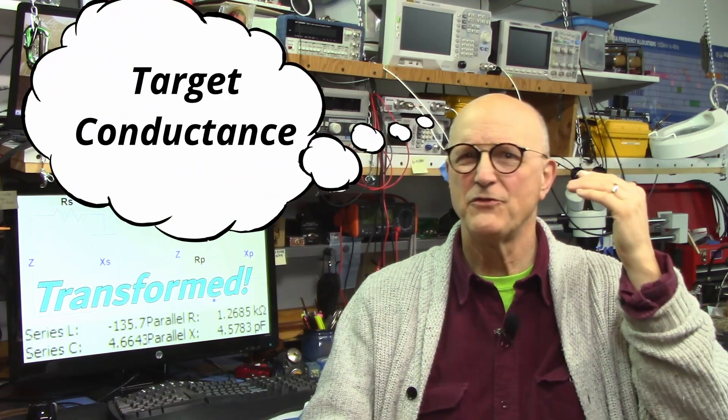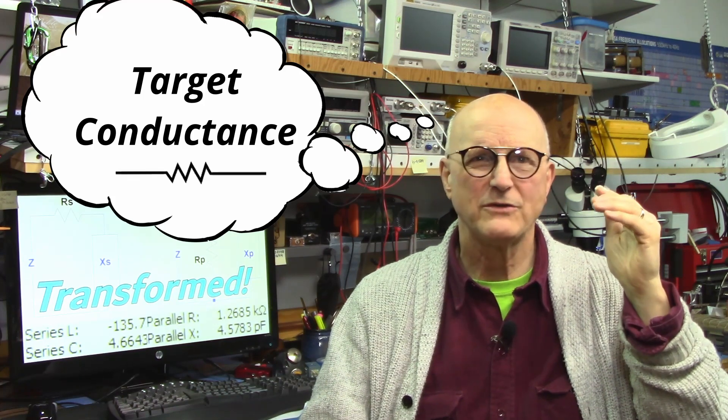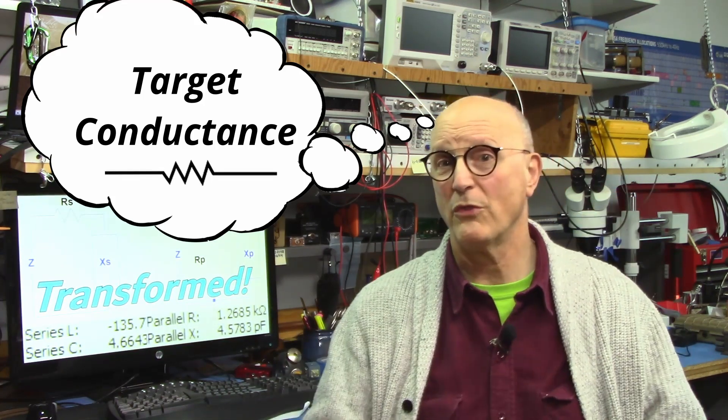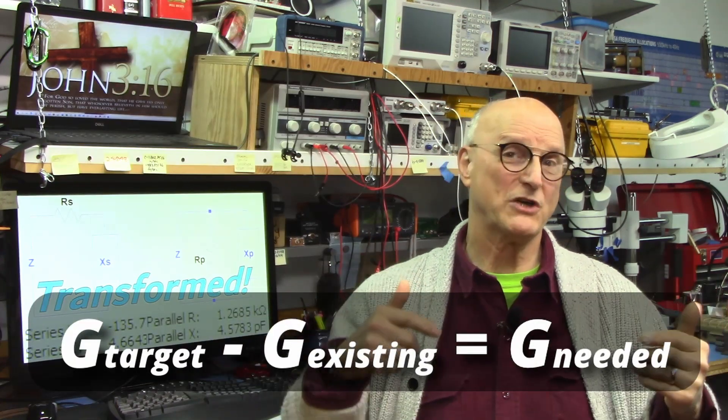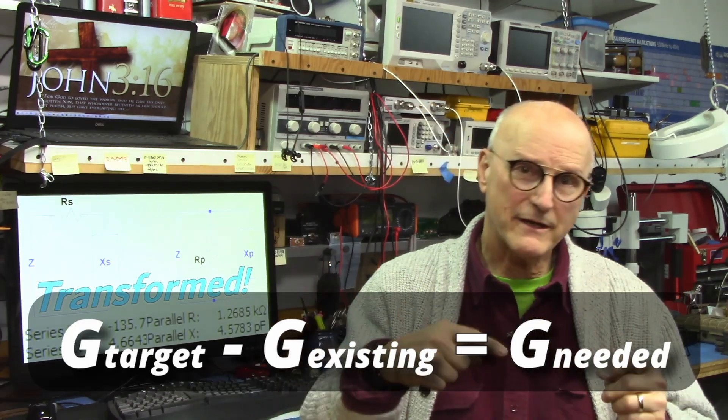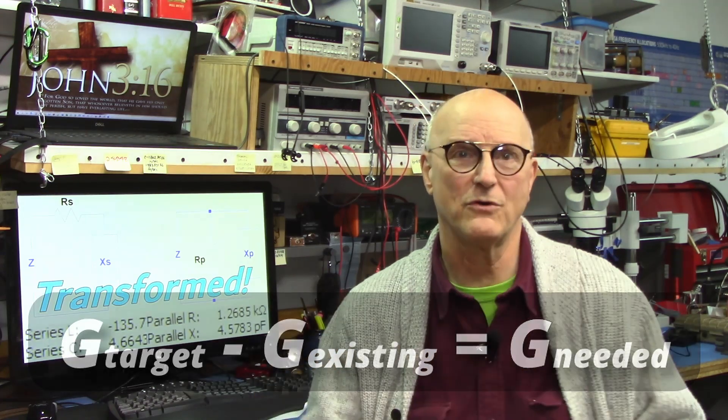What if, instead of thinking in terms of resistance, we think of this same scenario in terms of conductance. We have in mind the conductance that we are looking to achieve. We want to achieve this conductance by adding a resistor in parallel with whatever circuit is there. We would simply subtract the conductance of the existing circuit from our target conductance to get the conductance we need to add to achieve our goal.